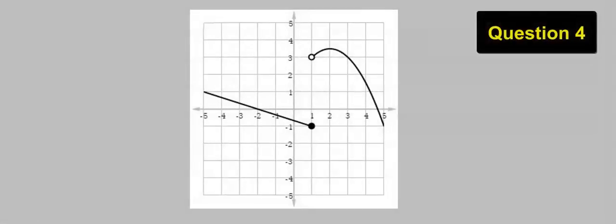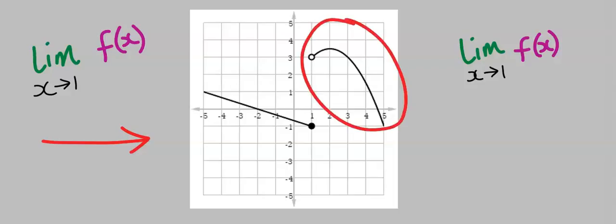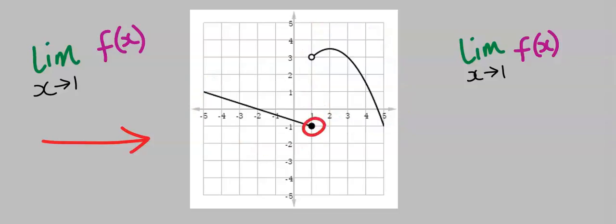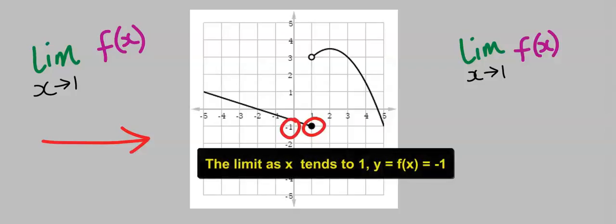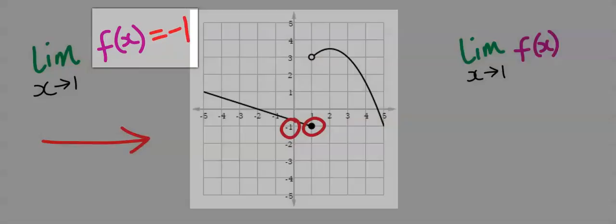Next, consider this question. We are going to approach this graph from the left, and likewise we are going to approach this graph from the right. To approach this limit from the left, ignore the right portion and concentrate on only the left portion. Hence, our answer here is minus 1. The left-hand limit is minus 1.